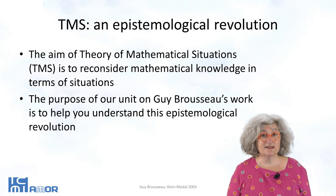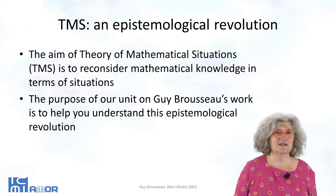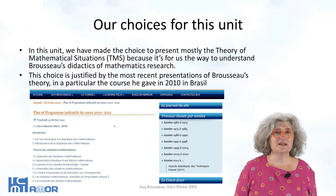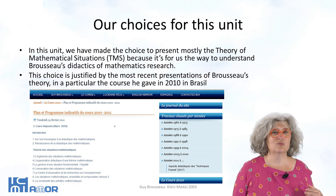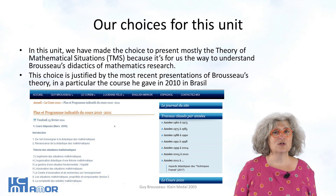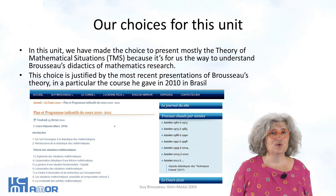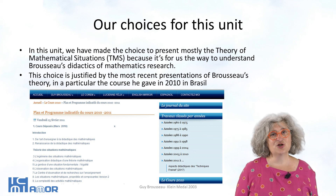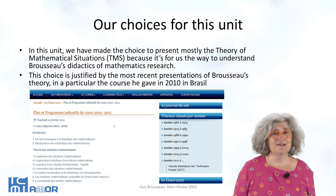The aim of the theory of mathematical situation, TMS, is to reconsider mathematical knowledge in terms of situations. The purpose of our unit on Brousseau's work is to help you understand this epistemological revolution. In this unit, we have made the choice to present mostly the theory of mathematical situation, TMS, because it's for us the way to understand Brousseau's didactics of mathematics research. This choice is also justified by the recent presentations of Brousseau's theory by Brousseau himself, in particular the course he gave in 2010 in Brazil. Perhaps for some of you who have been aware of earlier presentations, this choice can differ from what you have known before. But we think it will improve the understanding of Brousseau's work — that is the challenge of this unit.